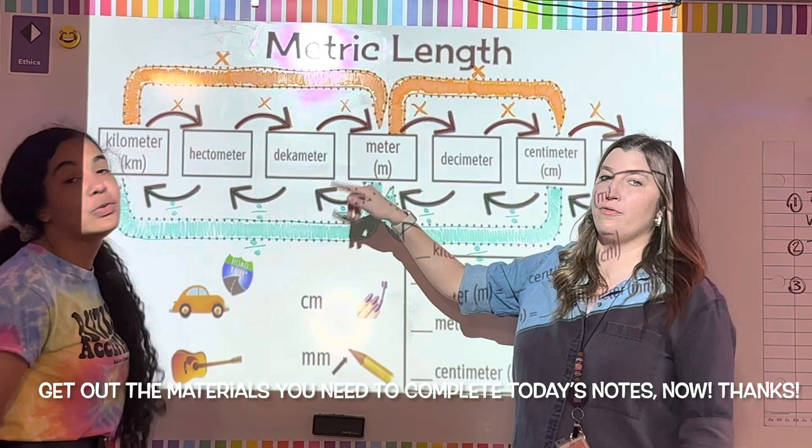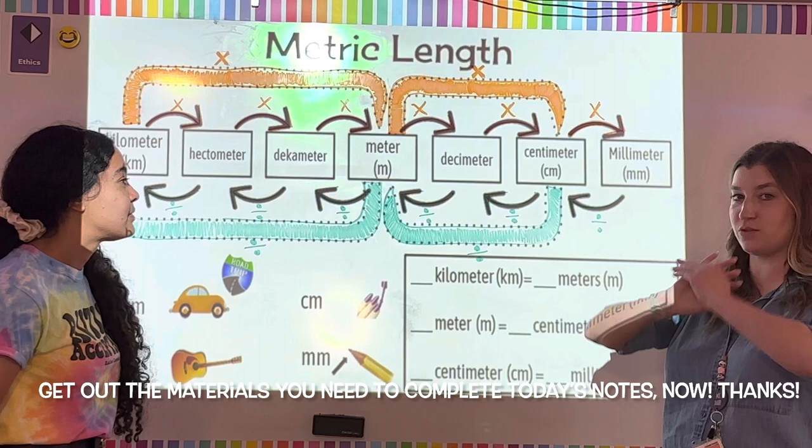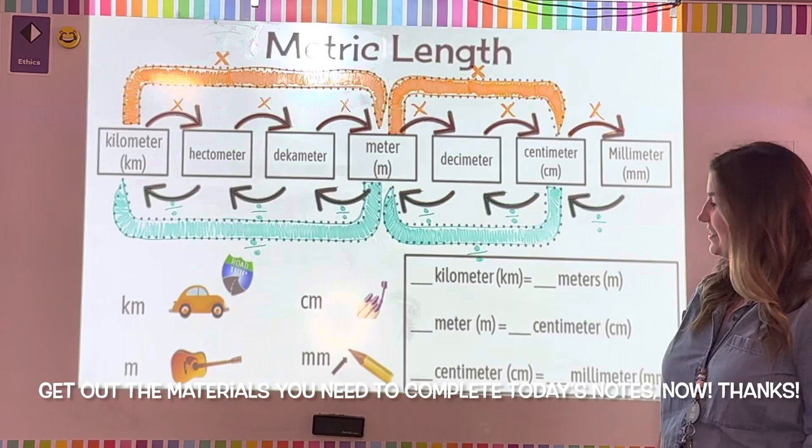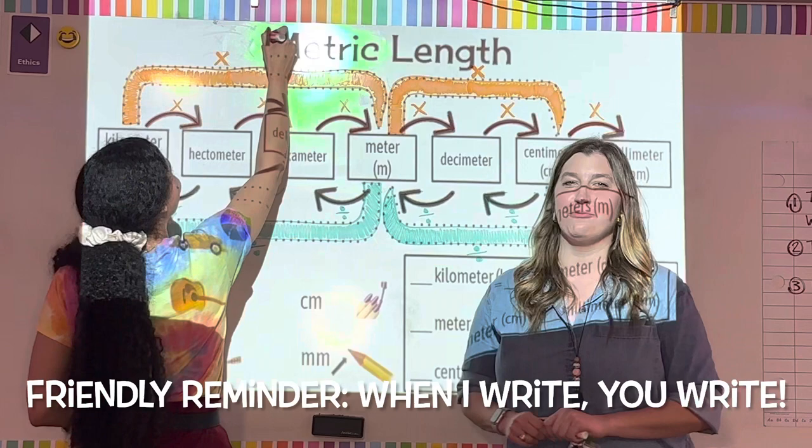Go ahead and color in the oranges and the greens before we get started. Pause the screen, get that in, and then once everything's ready, press play. Make sure you color in the orange and the green and the multiplication signs and the division signs.